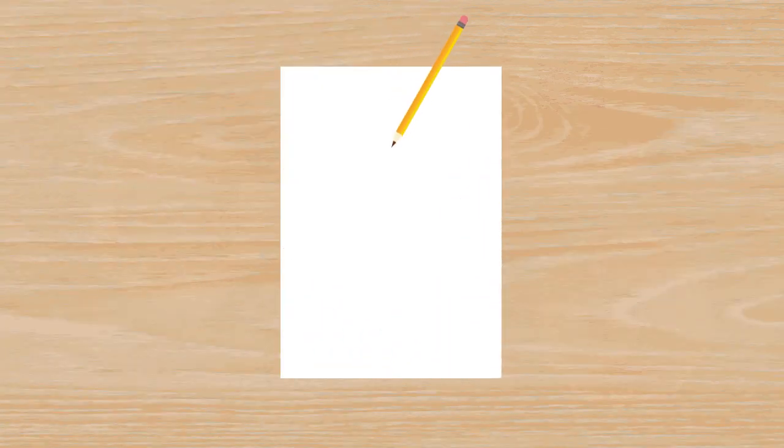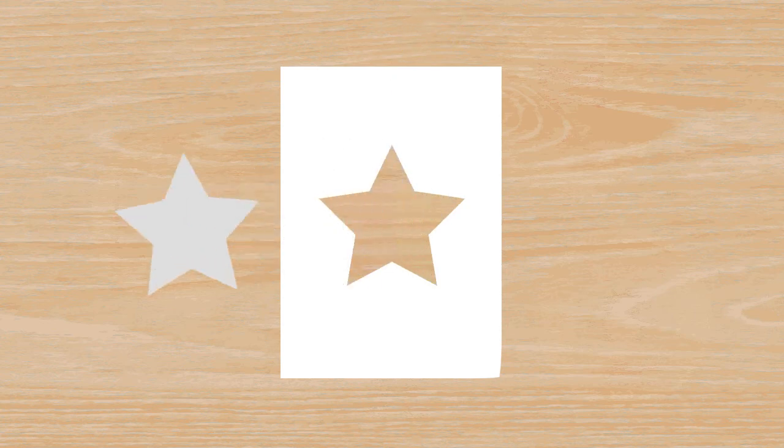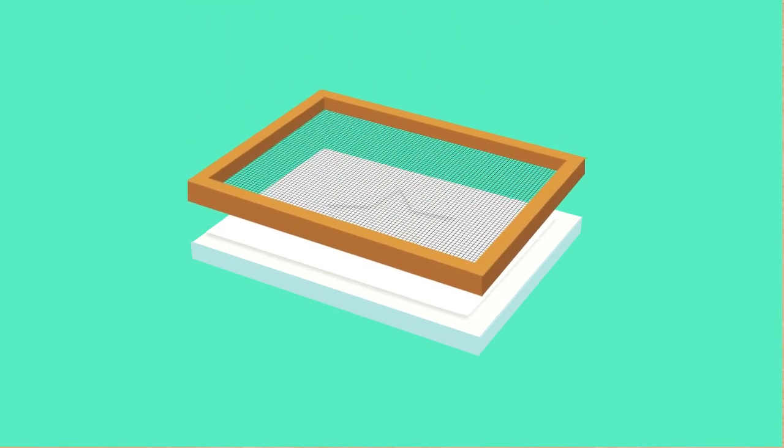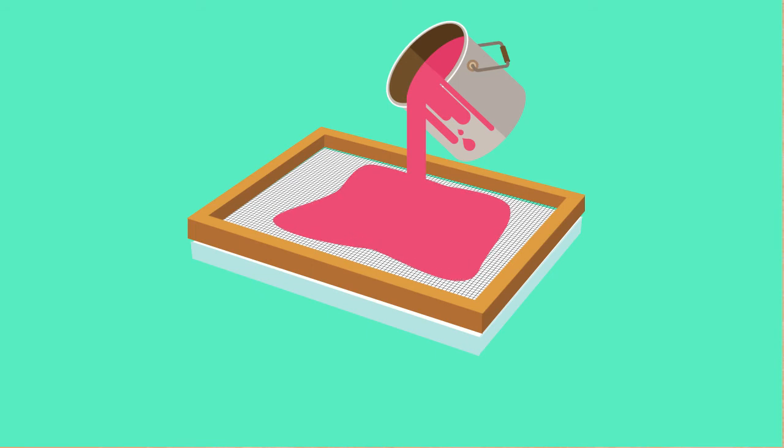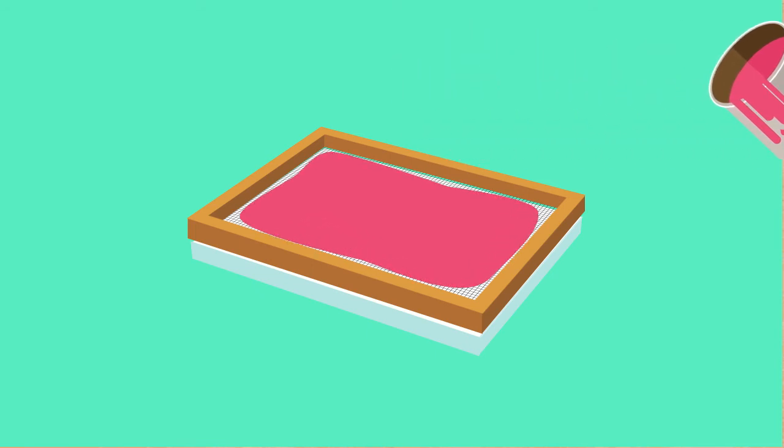To produce artwork using screen printing, you first draw a picture on a piece of paper and cut out the drawing. Then, you place the paper on top of a canvas and a screen on top of the paper. Next, you pour and spread ink over the screen. Finally, when you take everything off the canvas, you will see the image transferred onto the canvas.